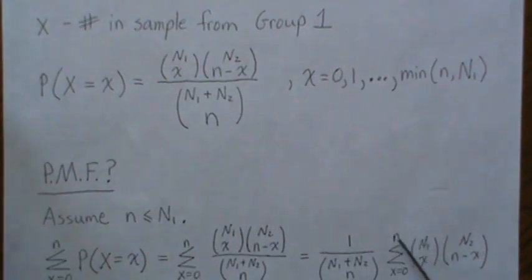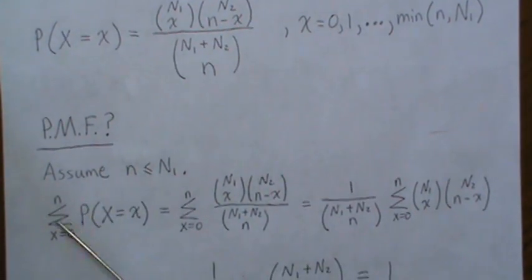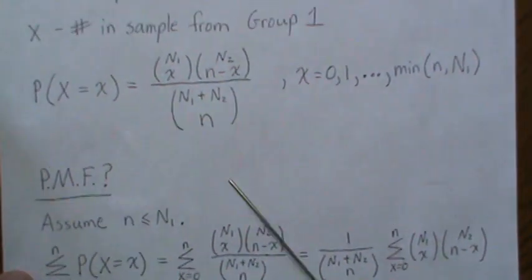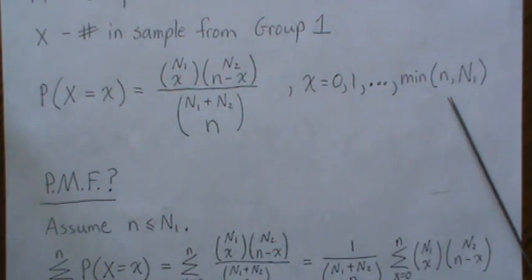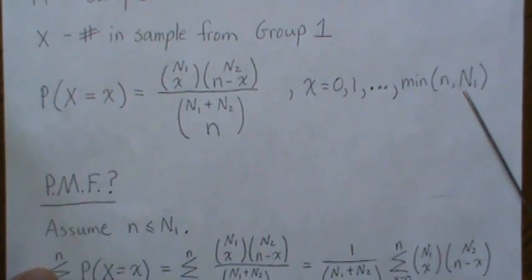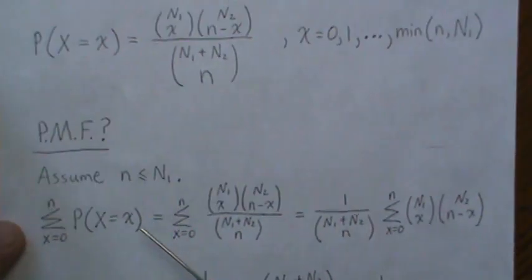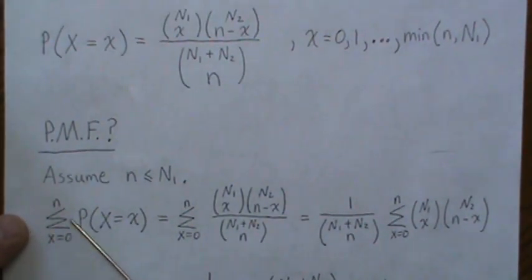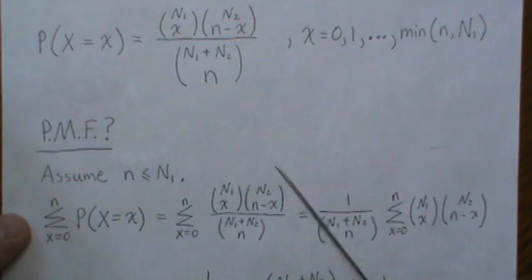So is this a probability mass function, or does it sum to 1? For what I'm going to do here, I'm going to assume that our sample size is less than N1. If it's not, then it's just a simple substitution to do it otherwise. So we sum from 0 to N of our probability mass function.